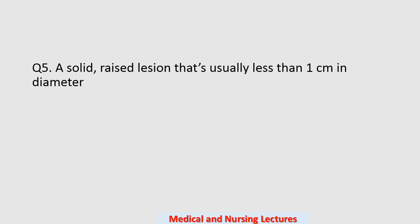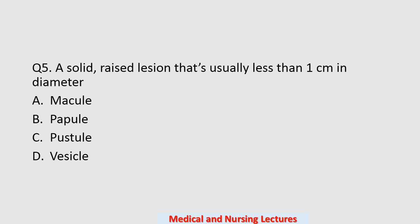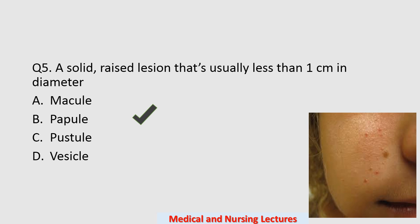Question number five: a solid raised lesion that is usually less than one centimeter in diameter. Options are macule, papule, pustule, or vesicle. The correct option is papule. Here you can see in the picture these are the papules on the patient's face.